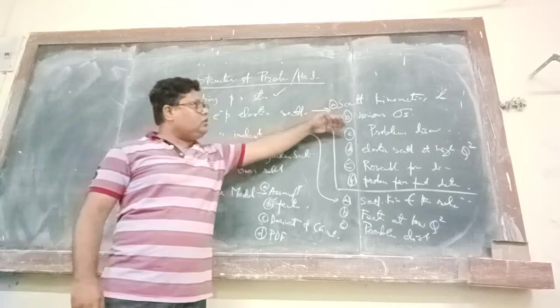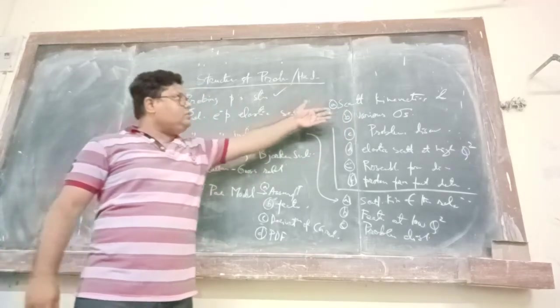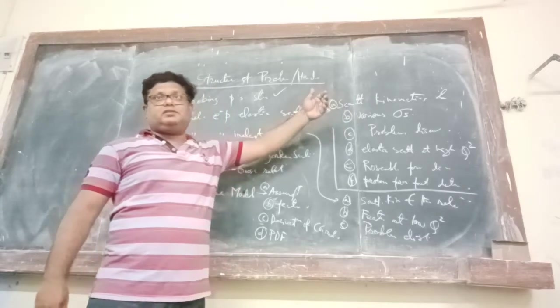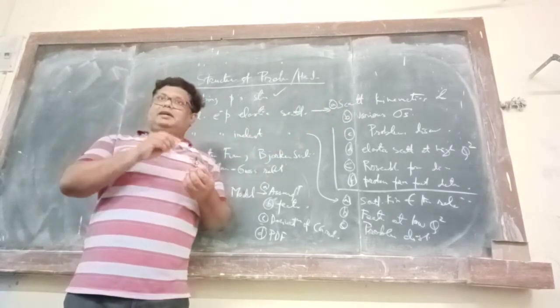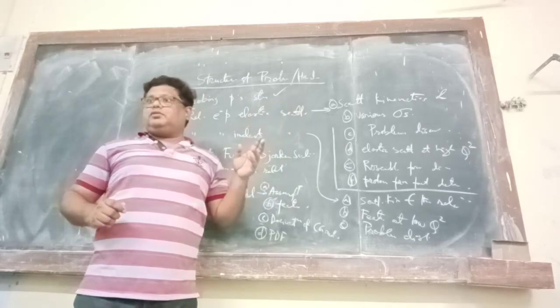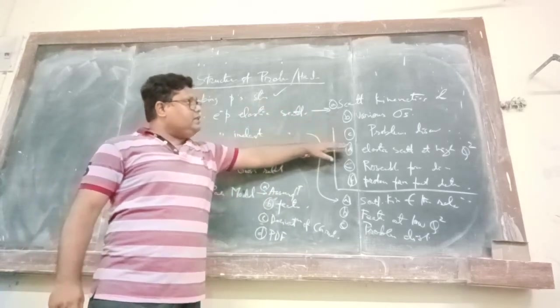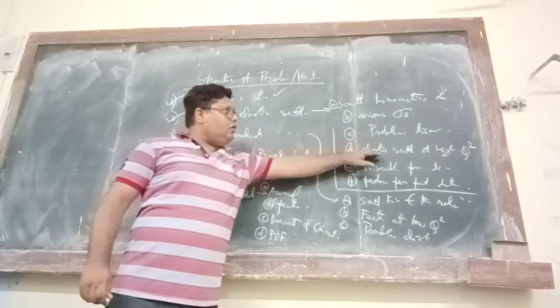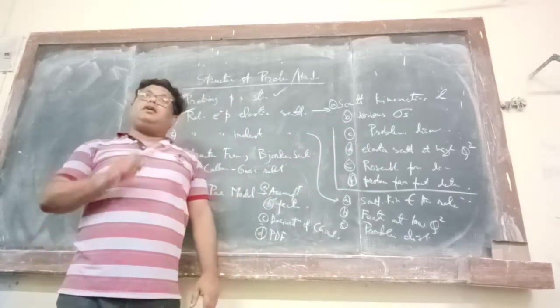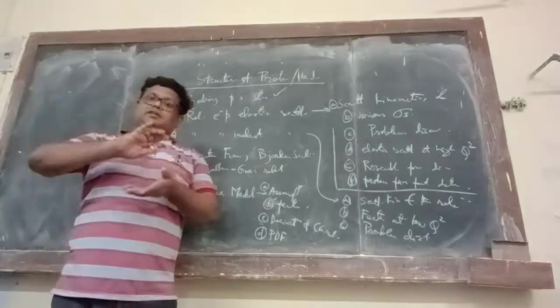Next I have also talked about various problems, problems related to these cross-sections. What should be the angle, momentum given the energy of the electron? We talked about these things. Next, we talked about the nature of elastic scattering at very high Q-square. This we talked about in a separate section.